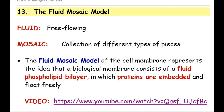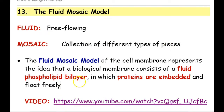Pretty amazing, really, if you think about it. So again: fluid means free-flowing. What's free-flowing? All of those proteins and lipids that are embedded within the membrane. The mosaic — well, it's made up of all sorts of different types of pieces, namely the phospholipids and all those proteins and lipids.